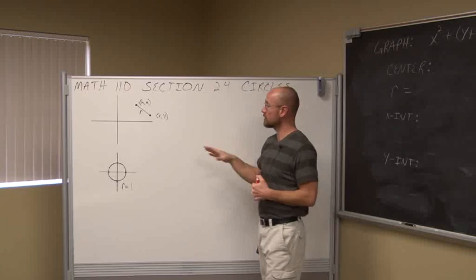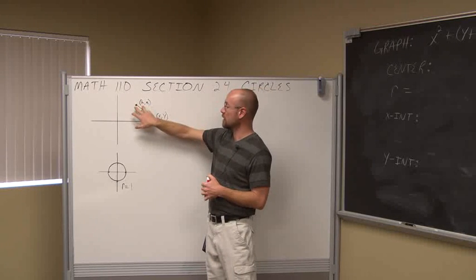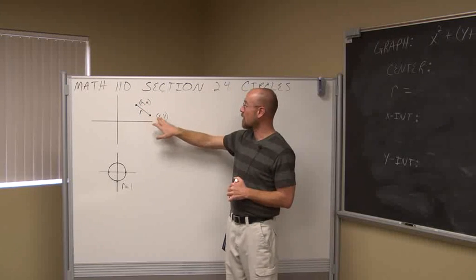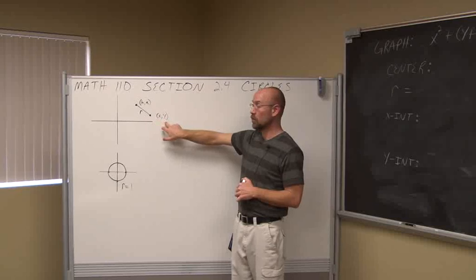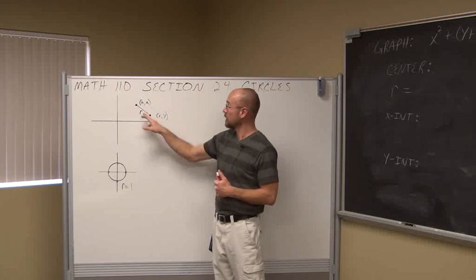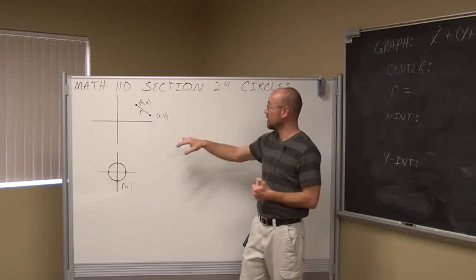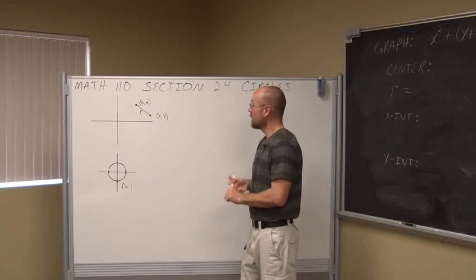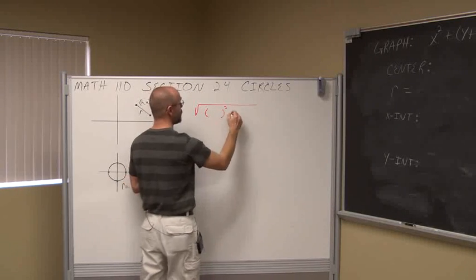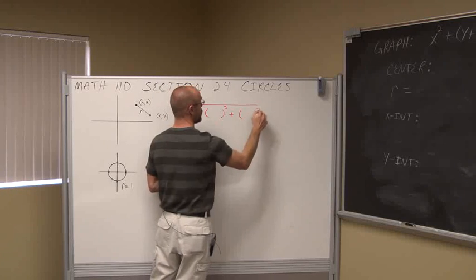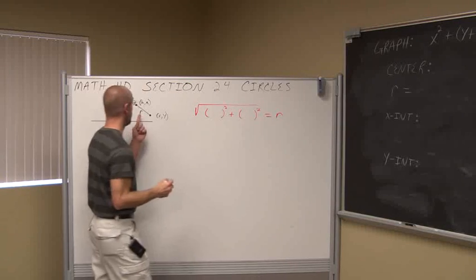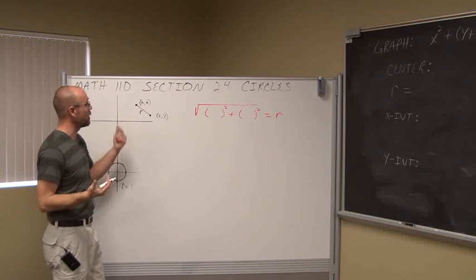The first thing we're going to consider is the point h, k — just some x value and some y value — and some arbitrary other point x, y. These two points lie r units away from one another. So let's use the distance formula, as we had seen in previous videos. The distance equals r, because that's the distance between these points.